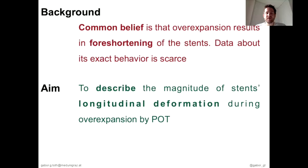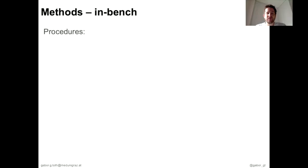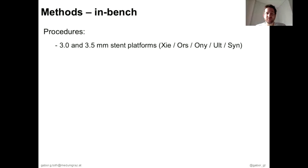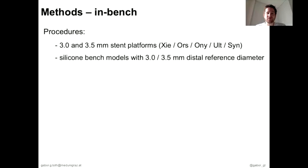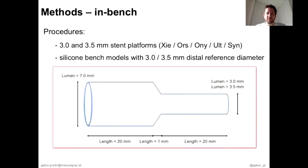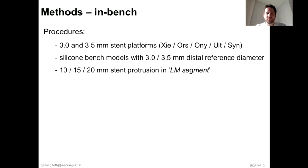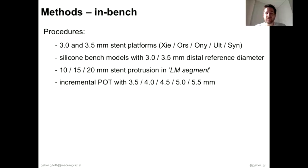The aim of our study was to describe the exact magnitude of stents' longitudinal deformation during overexpansion by POT. We performed a first in-bench analysis using 3.0 and 3.5mm stent platforms from 5 different vendors, implanted in bench models with 3.0 or 3.5mm distal reference diameter. We performed crossover stenting with 10, 15, and 20mm protrusion in the left main segment to simulate different anatomical settings, with incremental POT from 3.5 up to 5.5mm. OCT analysis measured stent length in the proximal, distal main branch, and total.